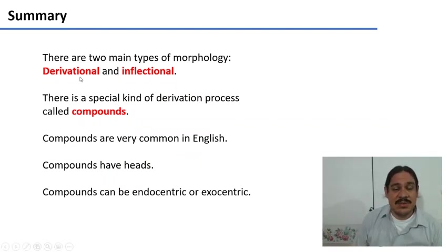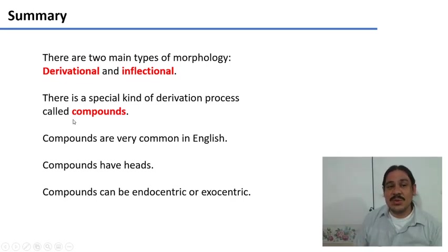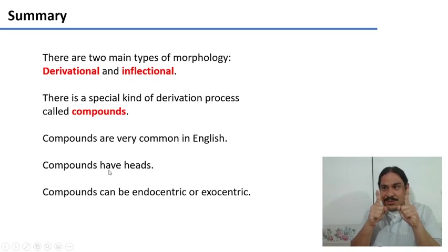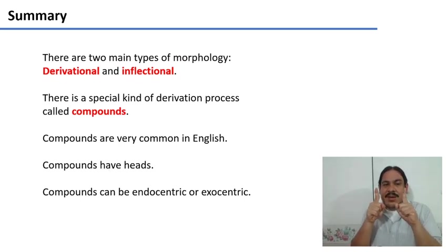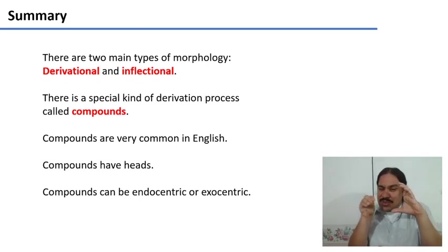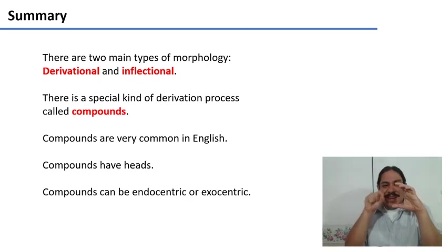So we have two main types of morphology: derivational and inflectional. There's a special kind of derivational process called compounding. Compounds are very common in English — they are the addition of two words so that you get a new meaning from the two words being together. Compounds usually have heads, which in English is the second word. Sometimes the head refers to the same thing as the whole compound — we call that an endocentric compound. And sometimes it doesn't, like 'redhead' — we call that an exocentric compound.